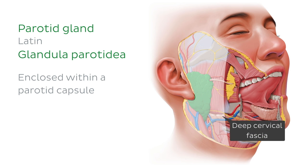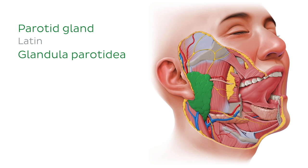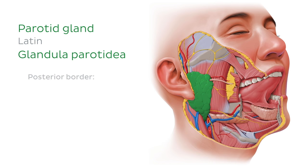In terms of location, the parotid gland is bordered by various structures. It is bordered superiorly by the zygomatic arch, anteriorly by the masseter muscle, inferiorly by the inferior border of the mandible, and posteriorly by the external ear and the sternocleidomastoid muscle.